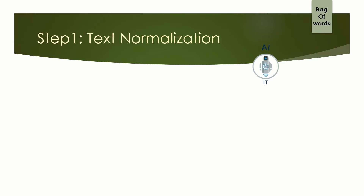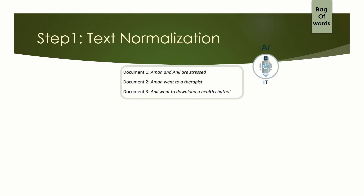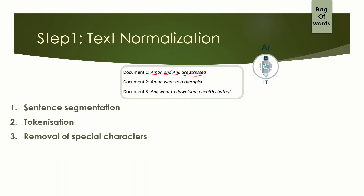The first step was text normalization. We actually break the paragraph into sentences. We already have sentences, so we are going to keep it as sentences. The second step is tokenization, wherein we take individual words like Aman and Anil are stressed and break the sentence into tokens. Then we remove the special characters. Here there are no special characters — no full stop, no inverted comma, colon, or semicolon. So this does not play a role, but it is a part of text normalization. Then we convert the text to lowercase.